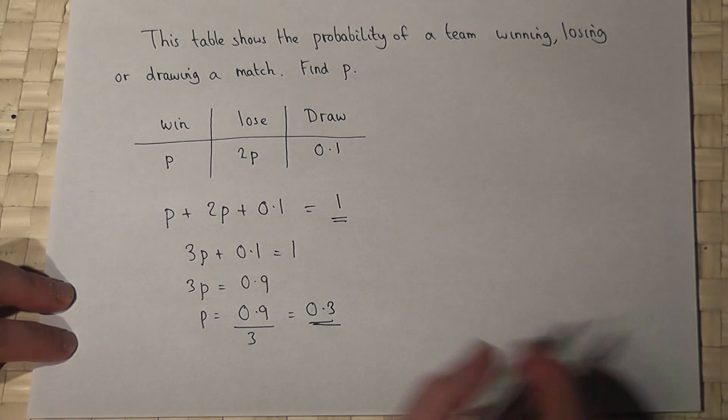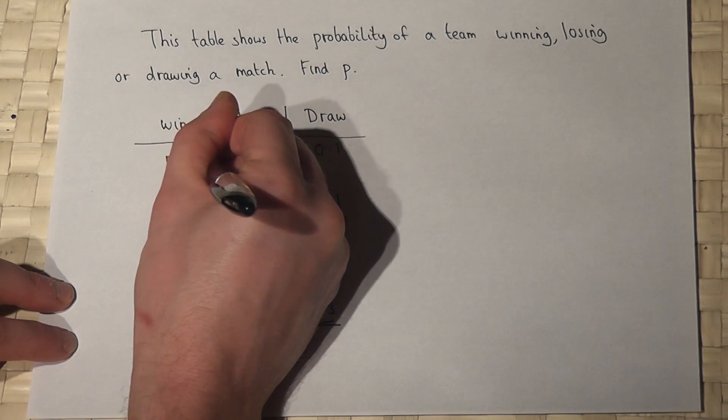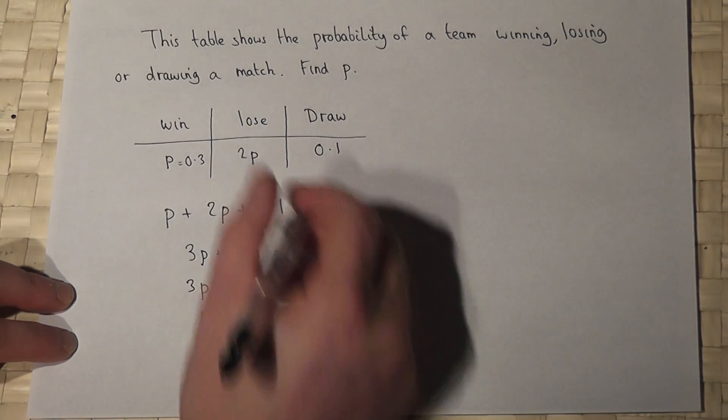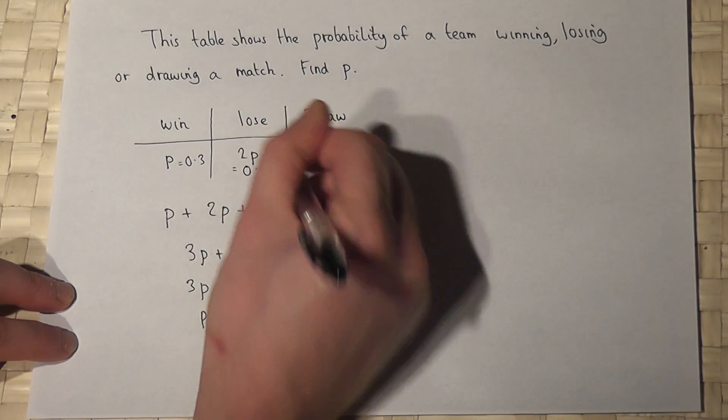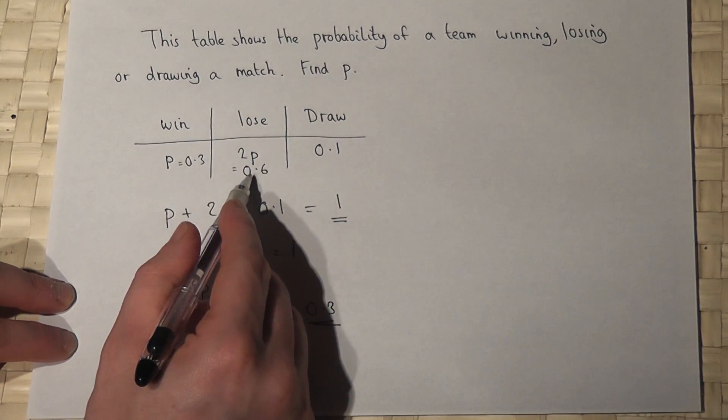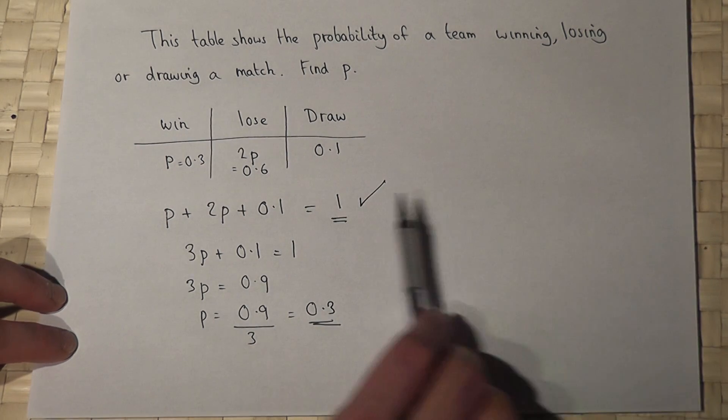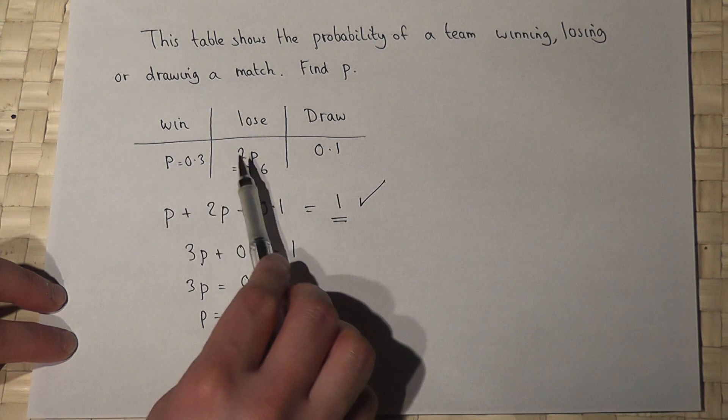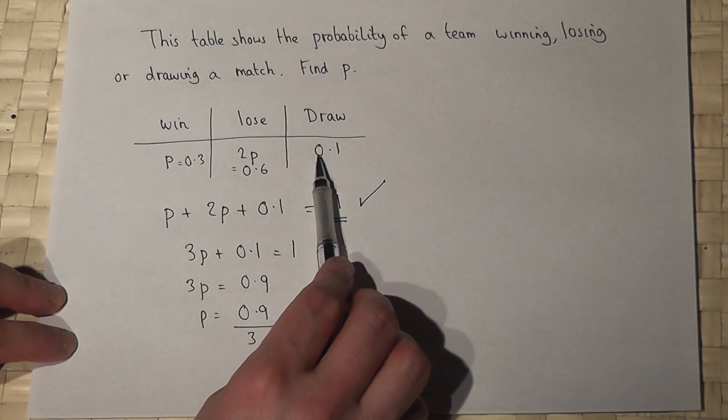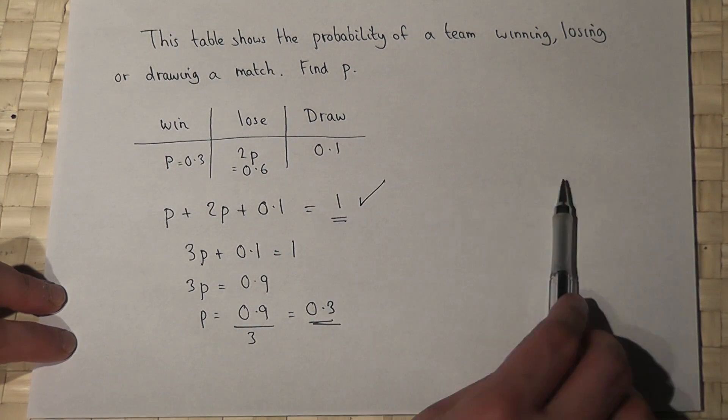I can check that. p is 0.3, 2 times p is 0.6, 0.3 plus 0.6 plus 0.1 does indeed equal 1. So there we go. That's the key fact: the sum of the values in the table has to equal 1.